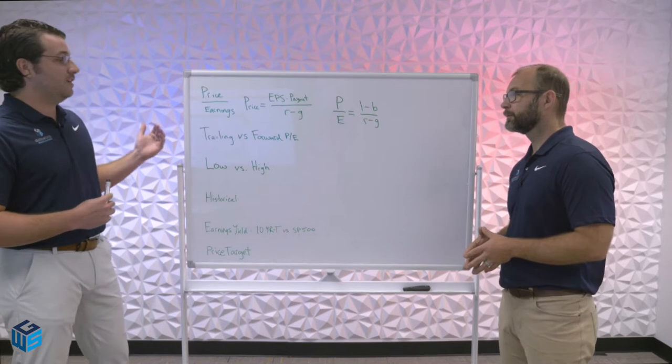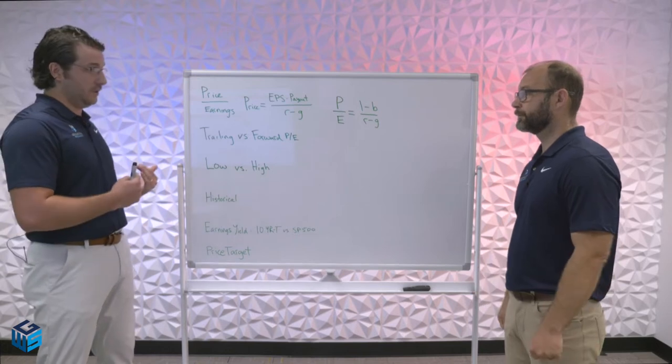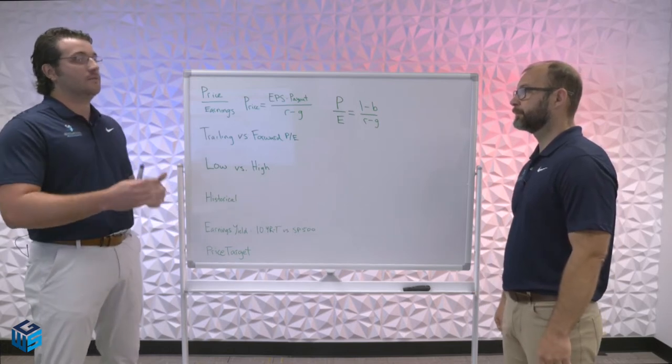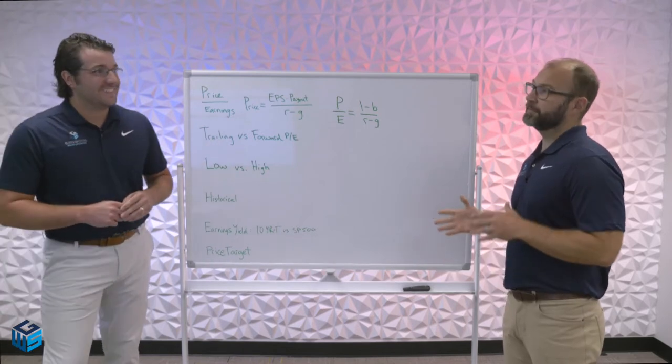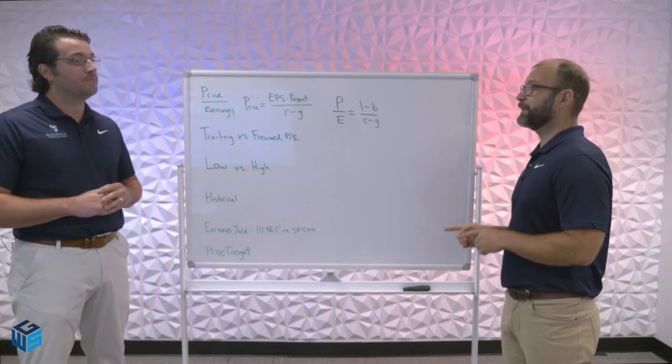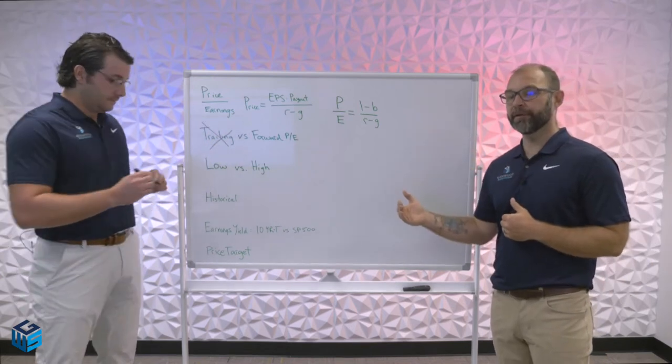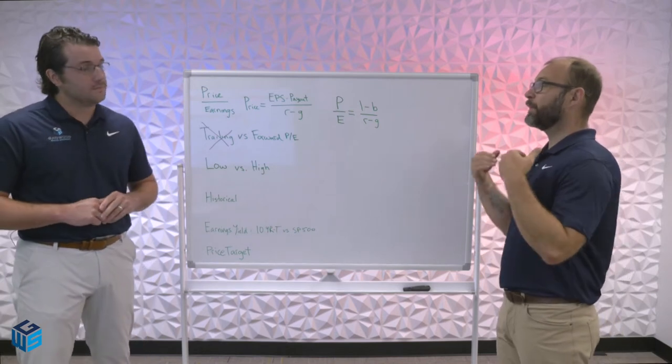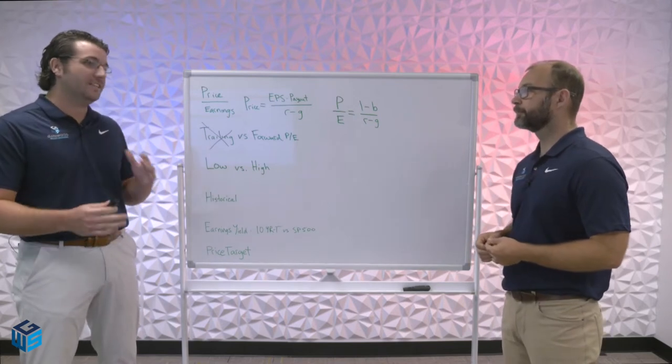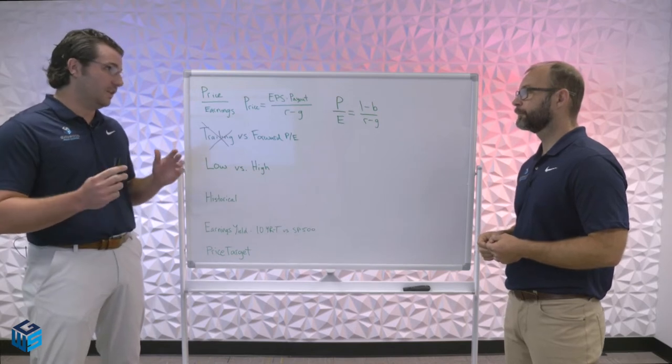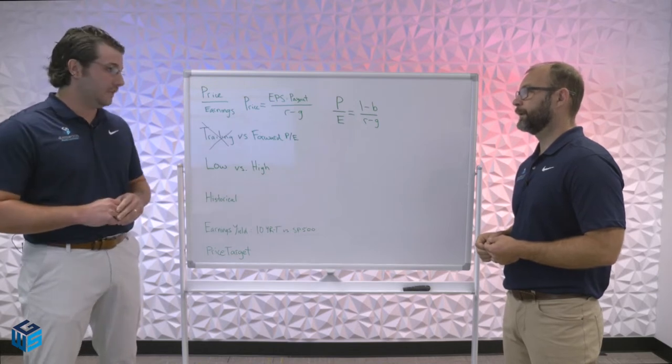So we'll move next into trailing versus forward PEs, because there's many different types of PEs. You could have a PE that uses earnings backward looking, last quarter or last four quarters, or forward earnings projections. So what do you like to use better? Well, I don't want to invest in the rear view mirror, and it doesn't matter what the company did earn. I want to buy what it's going to earn. Because remember, markets are forward looking. So we want to be looking out at what we expect earnings to be in the future, not what they have been.